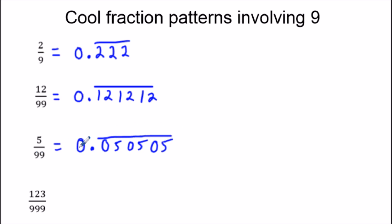If it was a different scenario where we had 50 over 99, then the digits would be reversed. We would have 0.5050 forever. But when it's a single digit up here, we have to put a 0 as a placeholder first.